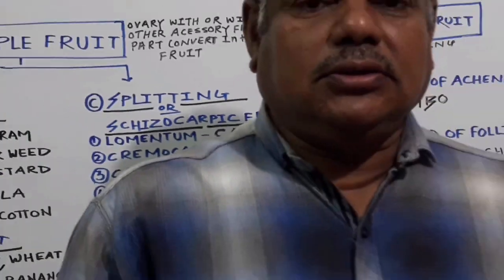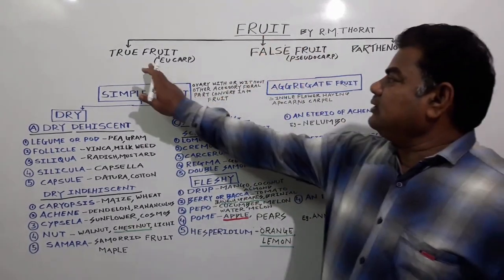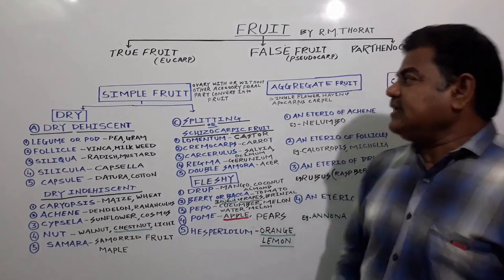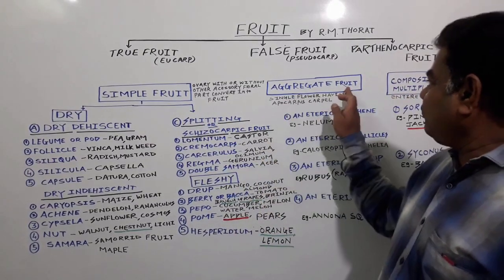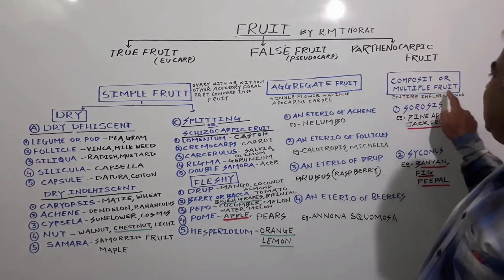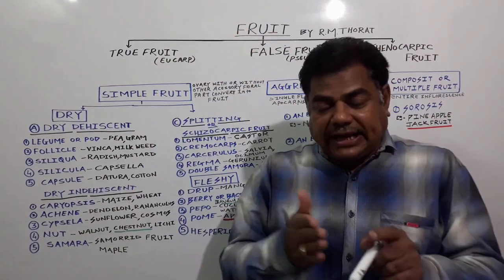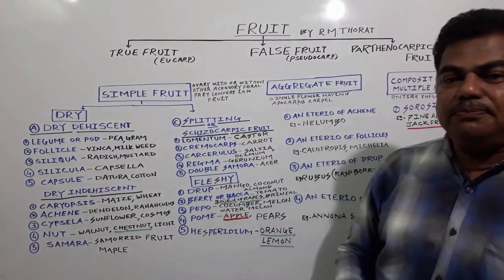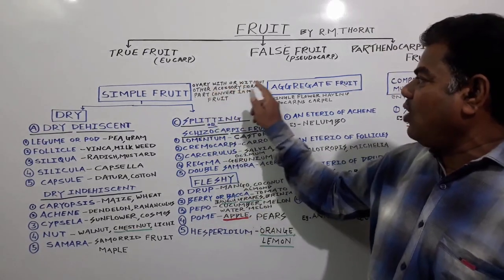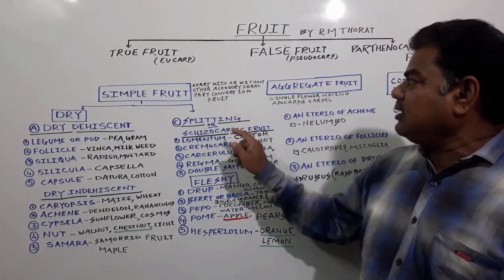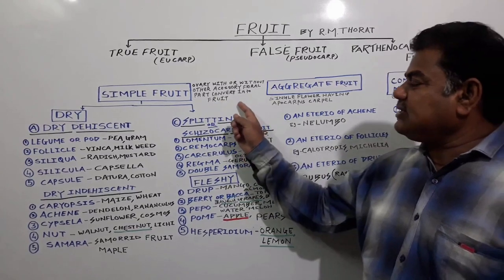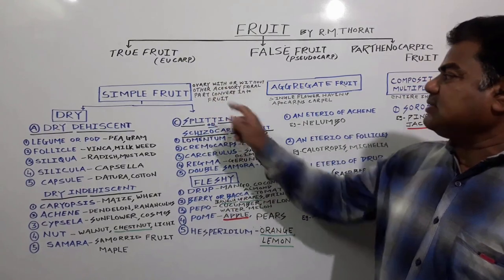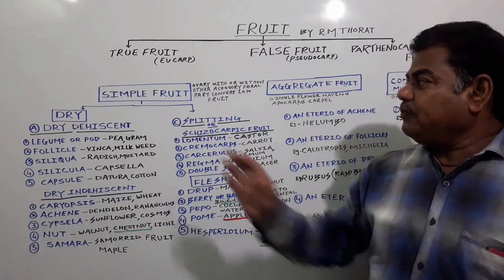So we have seen that fruits are of three types: true fruit, false fruit, and parthenocarpic fruit. Fruits are further categorized into simple fruit, aggregate fruit, and composite or multiple fruit. Simple fruits are those in which the ovary, with or without other accessory floral parts, converts into fruit.